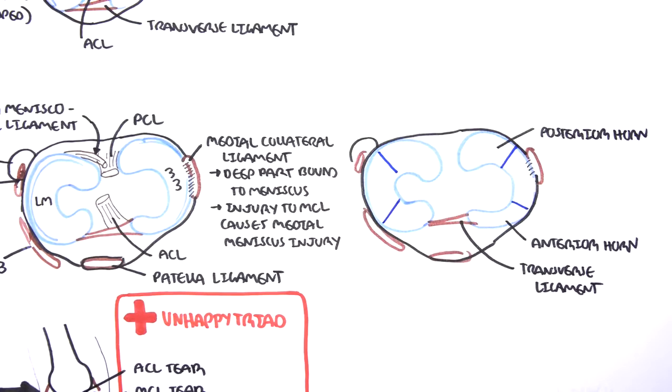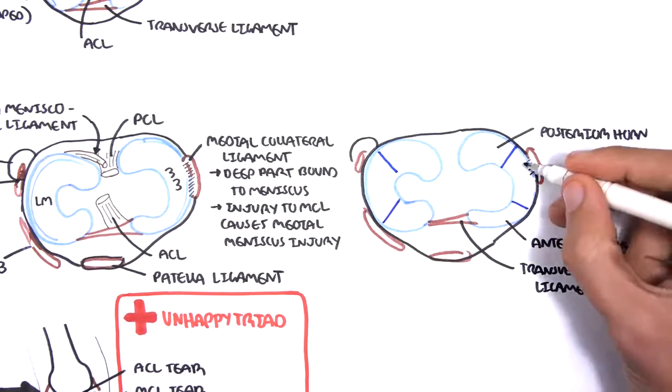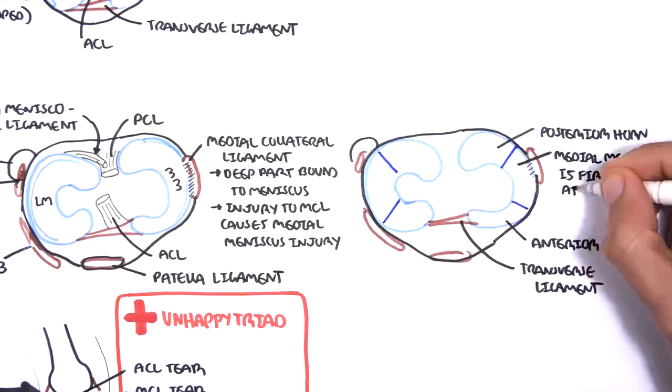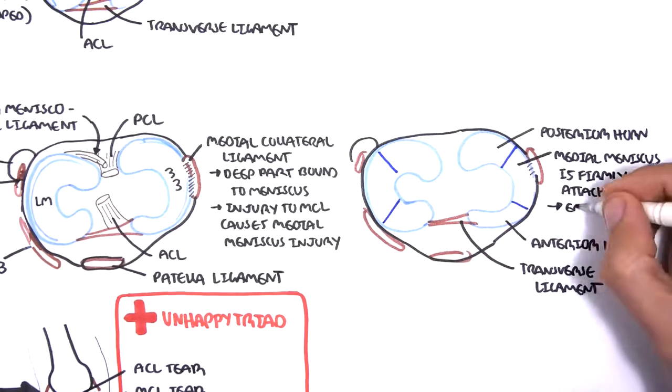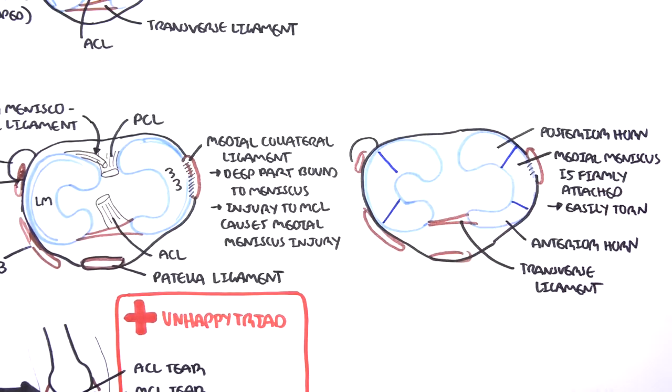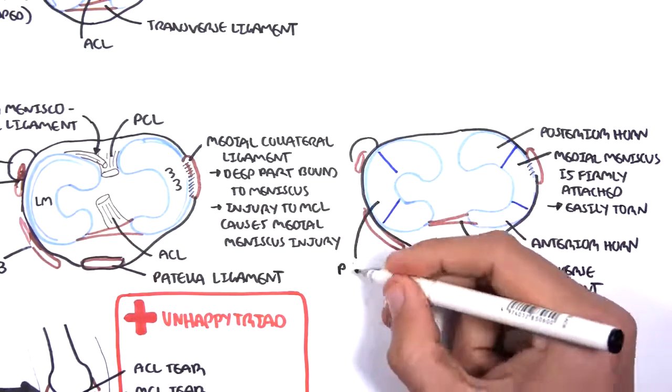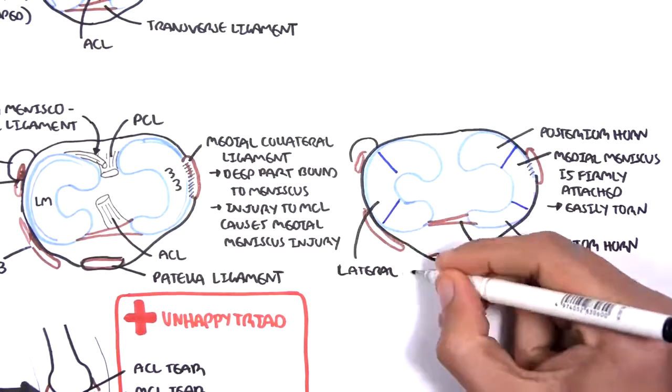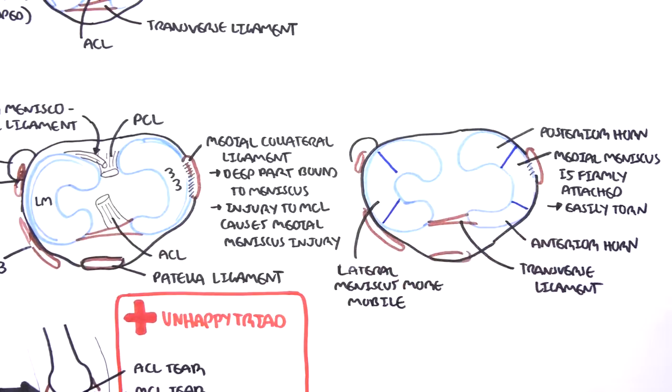It's also important to remember that compared to the lateral meniscus, the medial meniscus is firmly attached to the tibia and it's not very mobile. Thus, it is easily torn. The lateral meniscus, on the other hand, is slightly more mobile because the posterior horns of the lateral meniscus does not attach firmly onto the tibia.